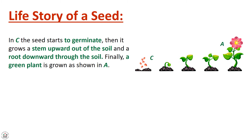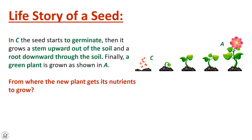Finally, the seed continues its development to become a green plant, as you see in this figure. بالآخر تطورت وصارت عم تكبر وتنمو لحتى صارت green plant. Now, from where does the new plant get its nutrients to grow?